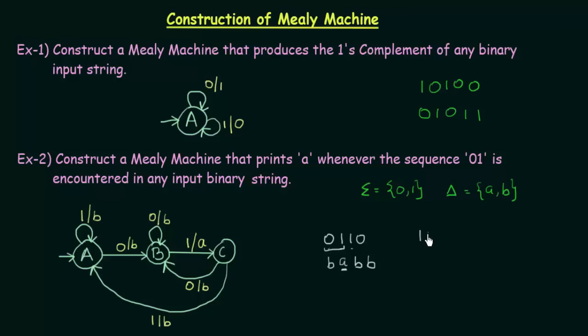Now let us check another string: 1, 0, 0, 0. Here we see that we don't have the sequence 0, 1. Starting from A: A on getting input 1 goes to A itself and prints B. Then A on getting input 0 goes to B printing B. Then B on getting input 0 stays in B printing B. And B on getting input 0 again stays in B printing B. So we did not have the sequence 0, 1, so no A's were printed — only B. We successfully constructed a Mealy machine that prints A whenever the sequence 0, 1 is encountered.